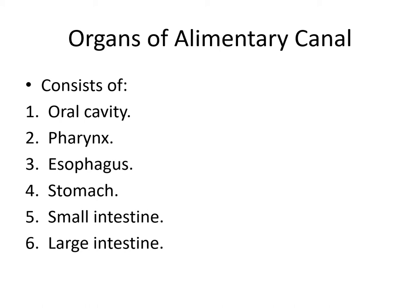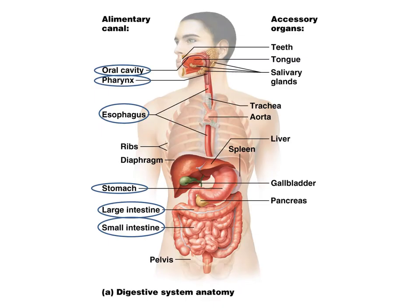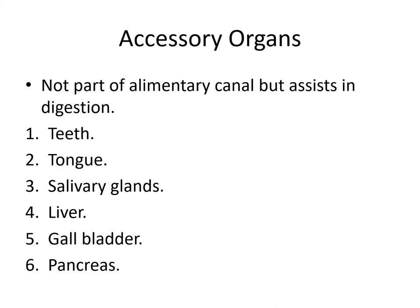We'll cover about the first half of these in this particular lecture. Here are the rough identifications: the oral cavity or mouth, the pharynx or throat, the esophagus as a long tube, the stomach, and the small and large intestine. These are the primary organs of the digestive system. We also have what's called the accessory organs, because they're not part of the alimentary canal, but they still assist in digestion.